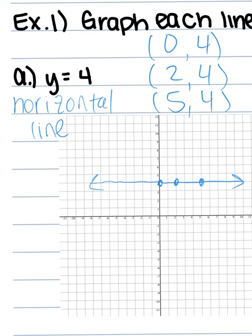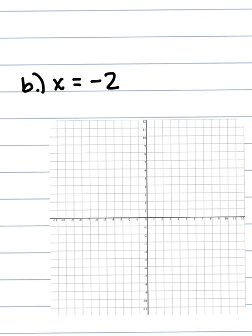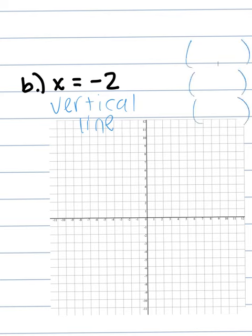If we have x equals a number, what line would you get? Vertical. So for x equals negative 2, write three coordinates where all x values must be negative 2. Pick any y values: one, two, negative four. So our points are (-2, 1), (-2, 2), and (-2, -4). Plot all three of those points.